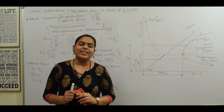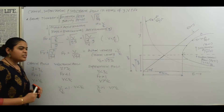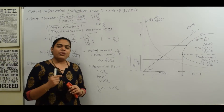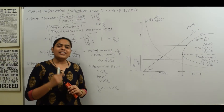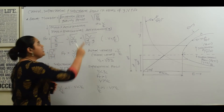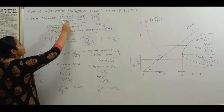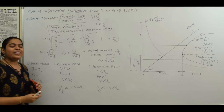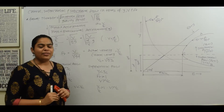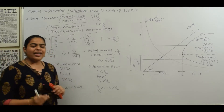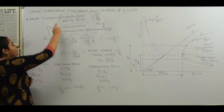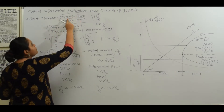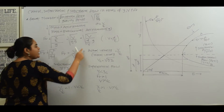Let's start quickly. First, we know about the Froude number. The Froude number is the ratio of the square root of inertia force by gravity force. Many students think it is simply the ratio of inertia by gravity — that is not correct. It is the square root of the ratio of inertia force to gravity force.